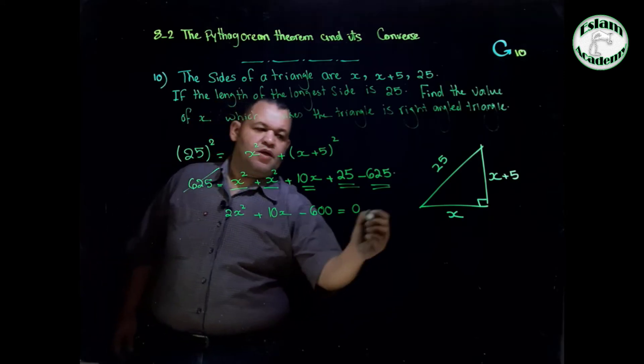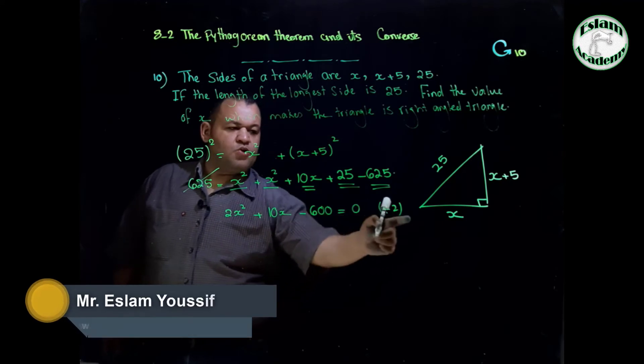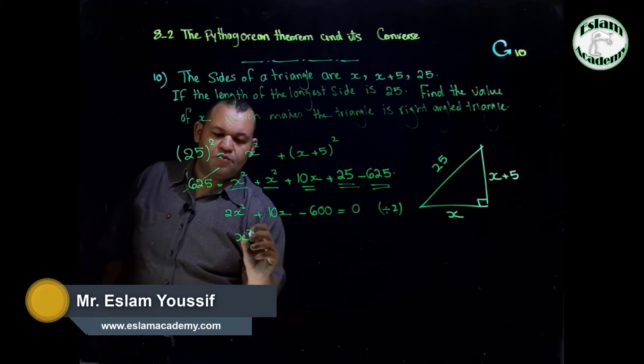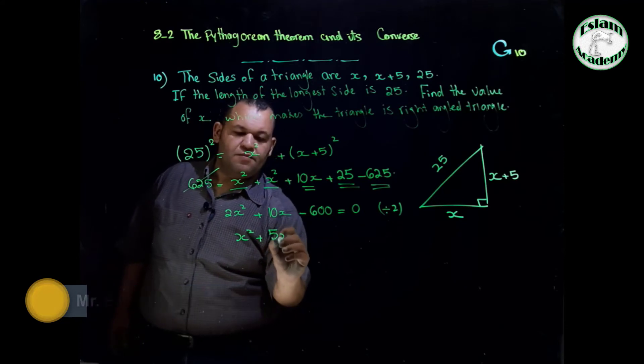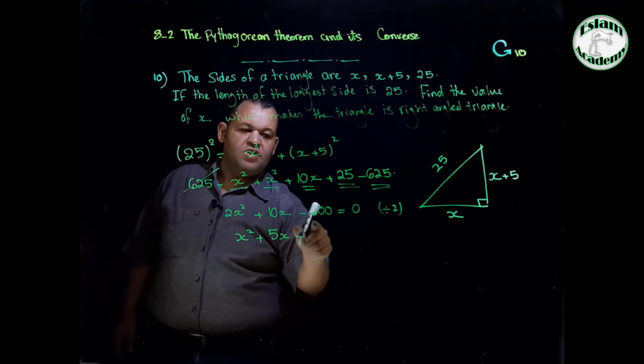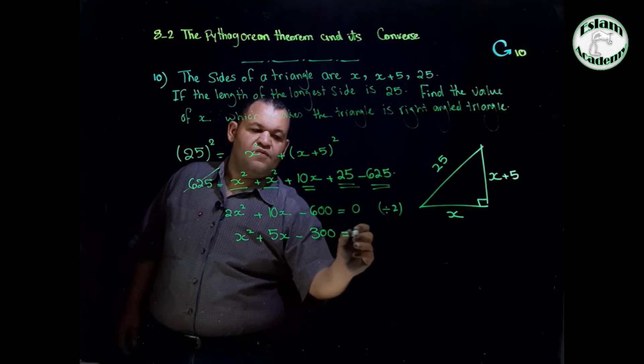Now we have a quadratic equation and we can divide all of the numbers by 2. So 2x squared divided by 2 equals x squared plus 10x divided by 2 equals 5x minus 600 divided by 2 equals negative 300. All of that equals 0.